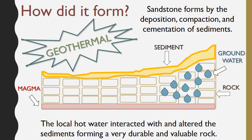Now that we've seen a sample from the Boise foothills, let's talk about how it formed. The buried sediments were compacted and cemented together, but what is unique is that the Boise foothills sandstone's formation was influenced by geothermal activity. When I use the term geothermal, I'm talking about heat that comes from inside the earth. Along the Boise mountains, there is hot water trapped in the rocks below the surface, and sometimes that hot water is able to reach the surface through cracks and breaks in the rock. The geothermal water along the Boise foothills reached the sediments near the surface and altered them to form a very durable and valuable rock.